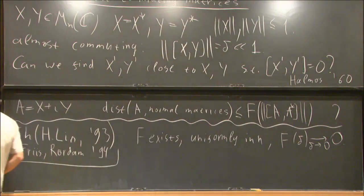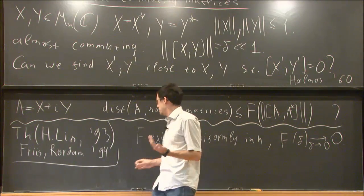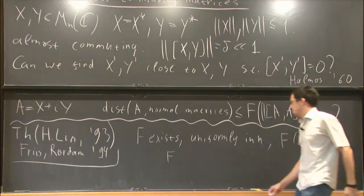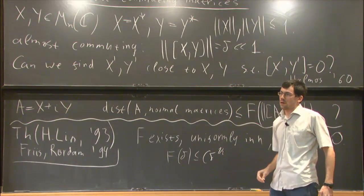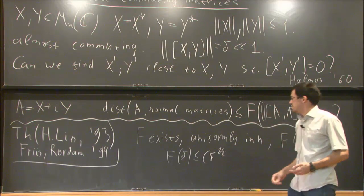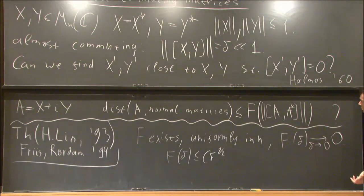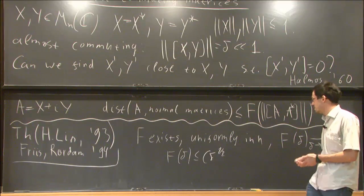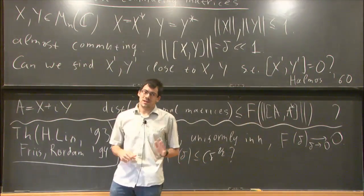But the question whether you can find the quantitative version of this function was open, and of course the conjecture was that it's just this norm to the power one half. This happens whenever the dimension is fixed. It's very easy to obtain an estimate like c(n) times delta to the power one half. It's also a natural expectation from homogeneity reasons, because this distance is linear basically and this has homogeneity two, so one half is the best you can get.